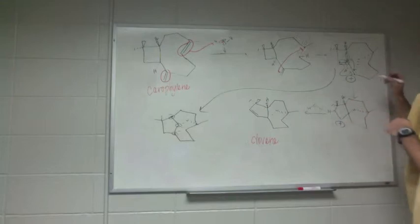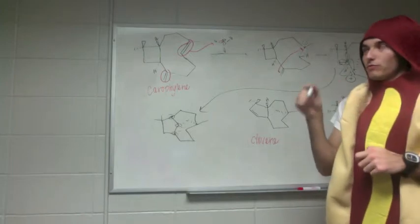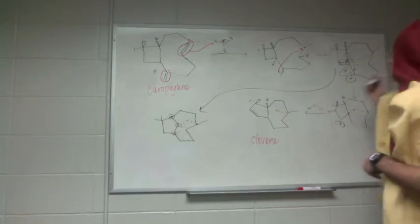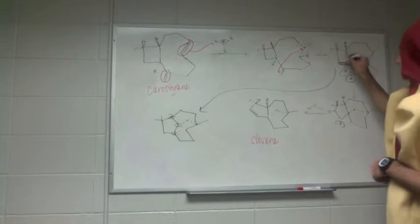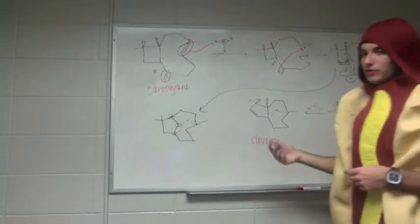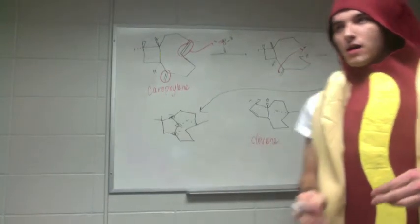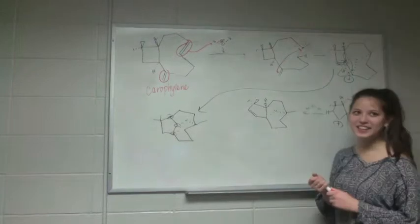This is a rearrangement that causes the carbocation to go from a tertiary position to a secondary position. But since the ring strain is relieved, it happens anyway, even though the carbocation isn't supported enough. Is that good? Okay, so in the last step...